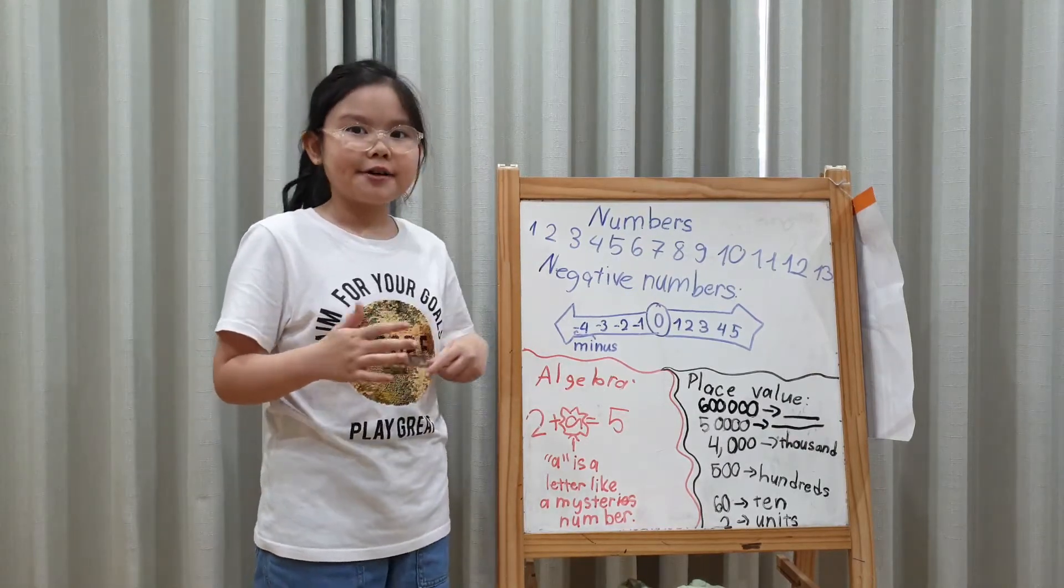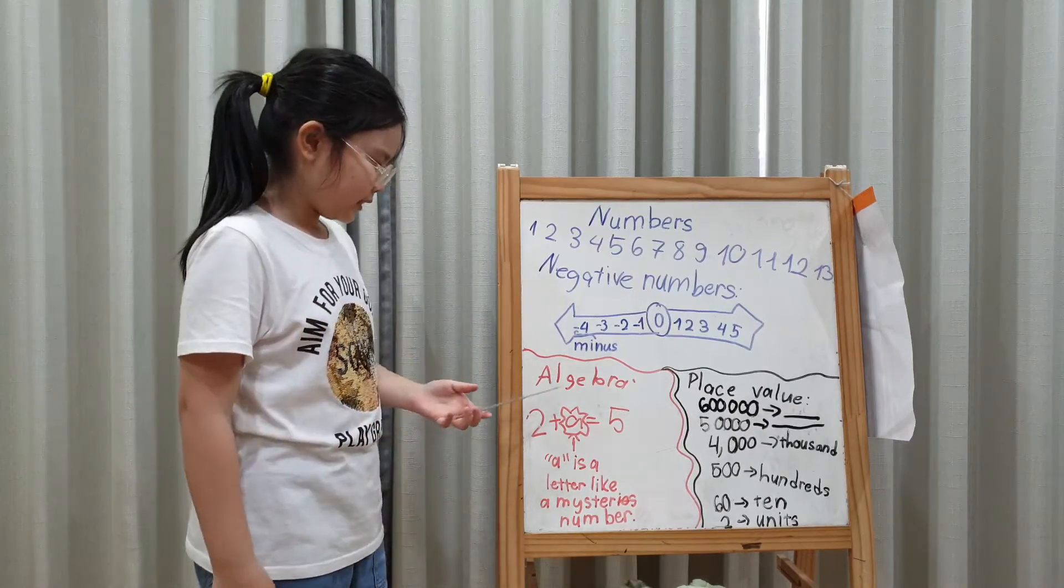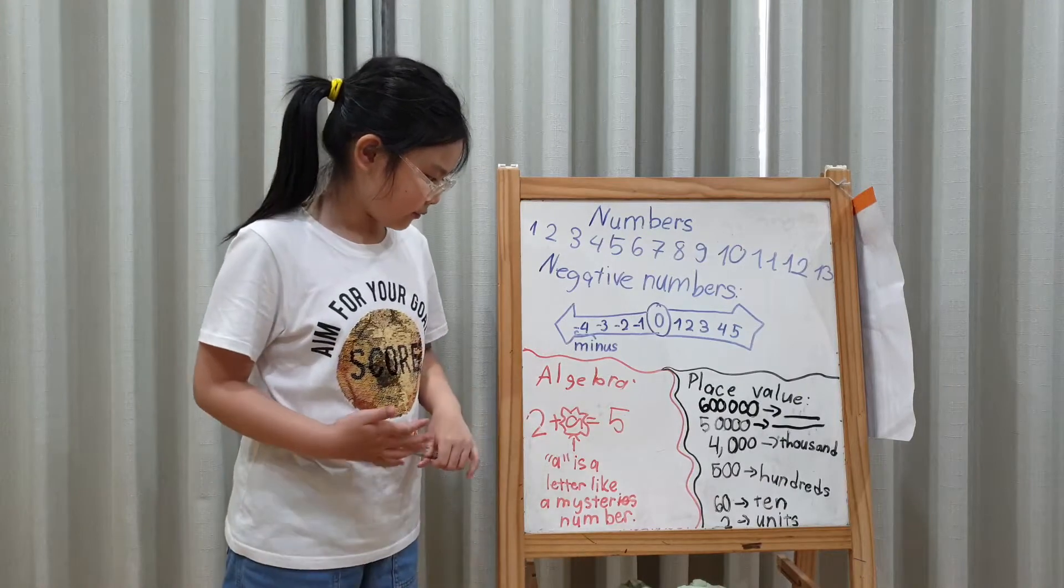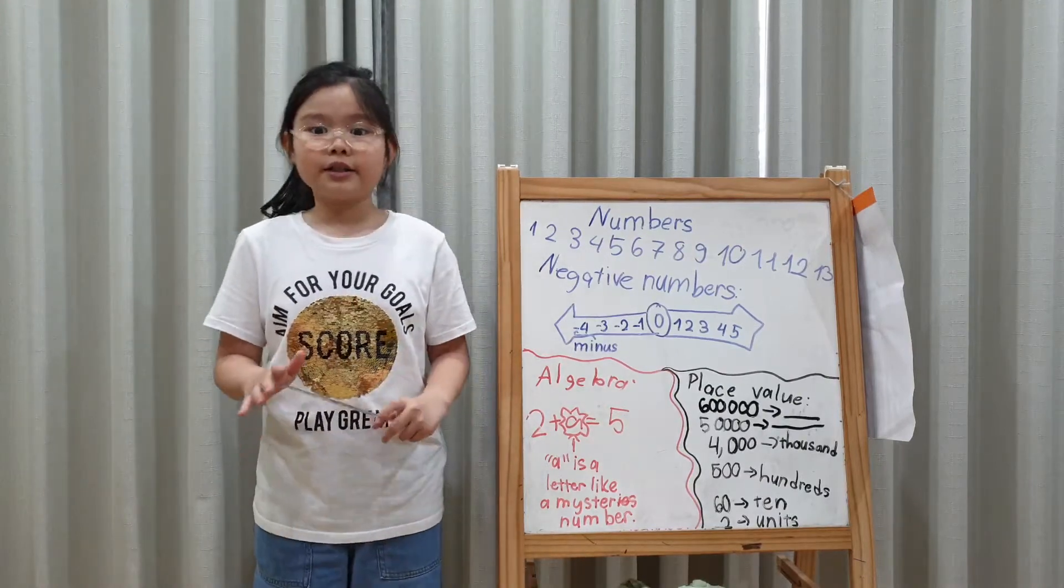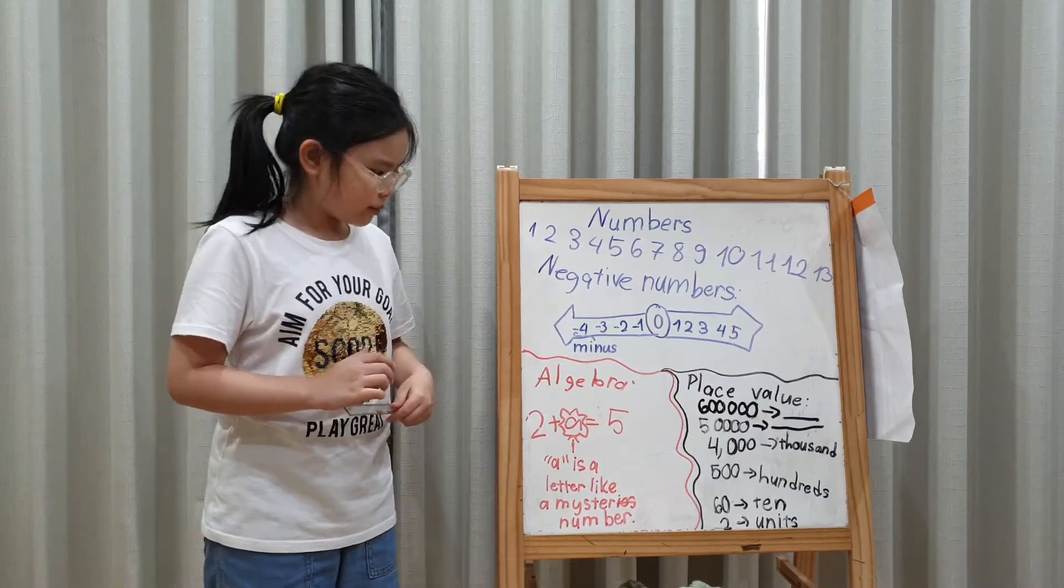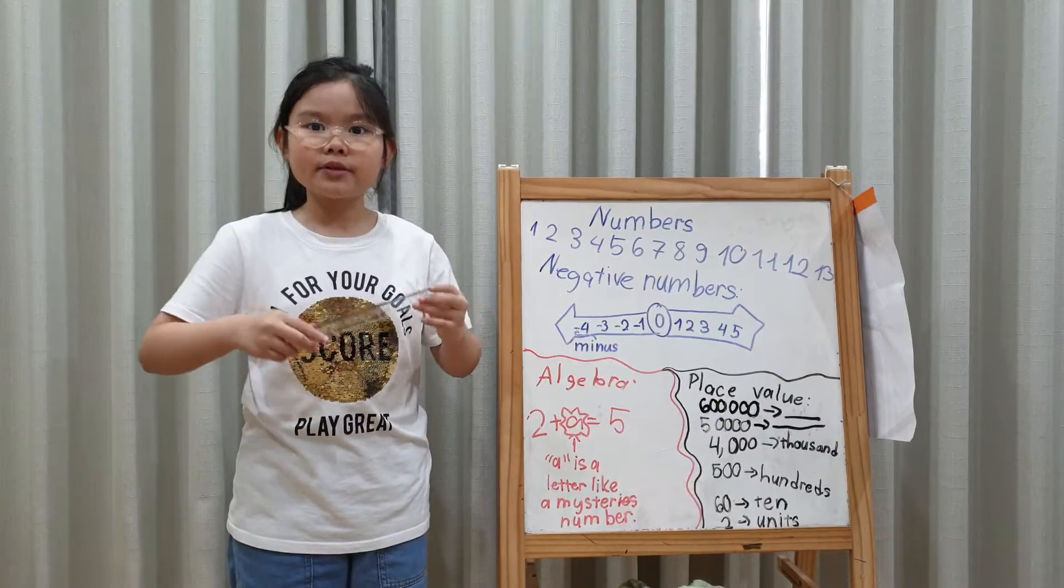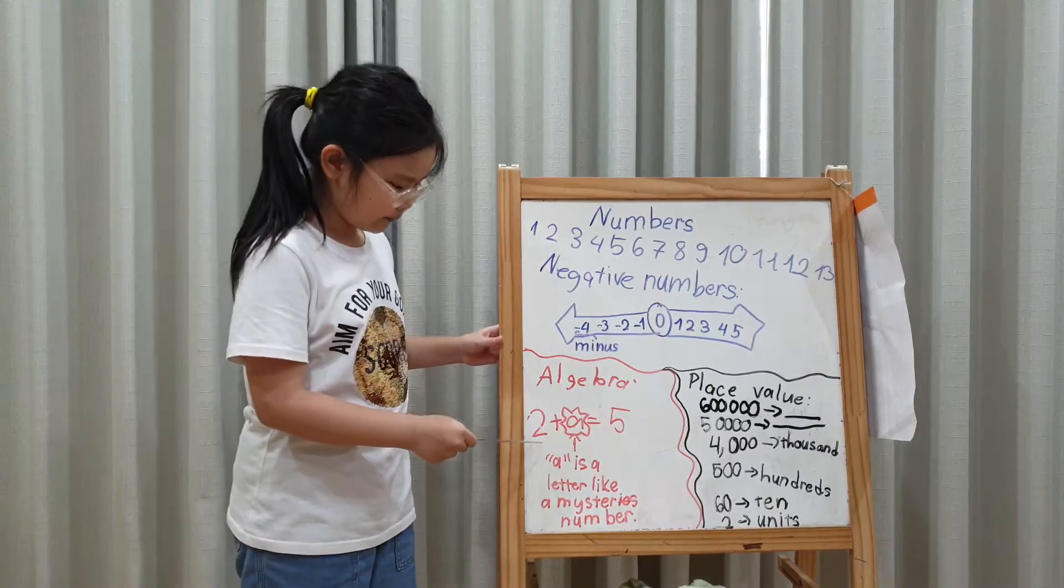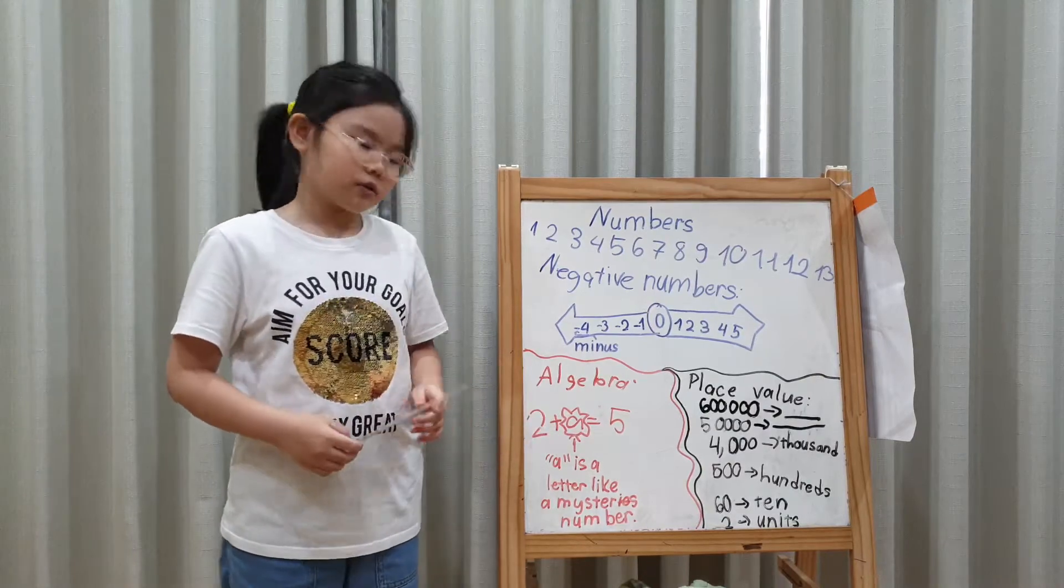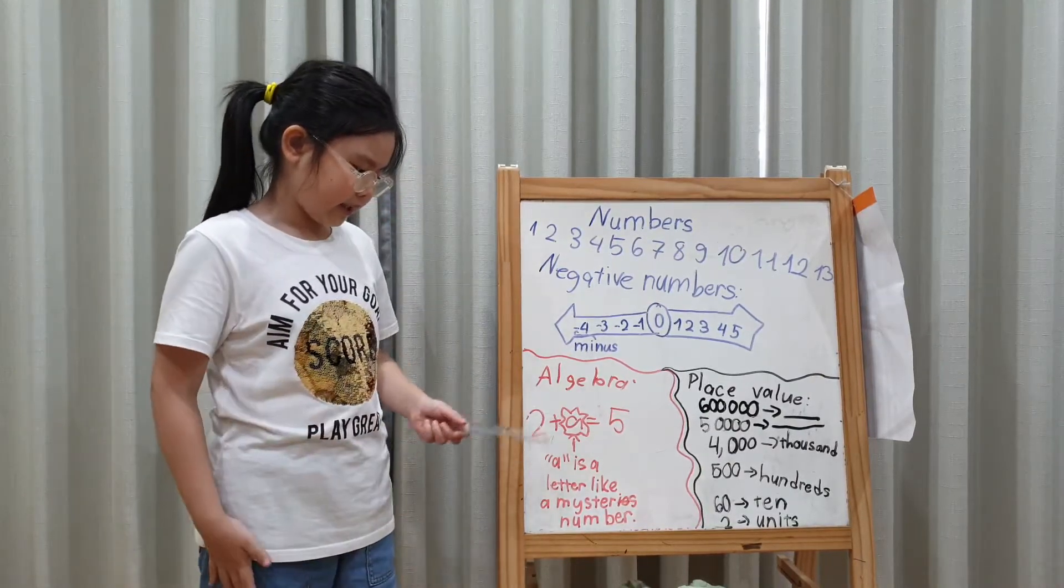Then later, we can have some questions. Algebra. Do you know what's algebra? Algebra is kinda like finding a mystery letter like this one. Algebra 2 plus A equals 5. You didn't know what is this A being?